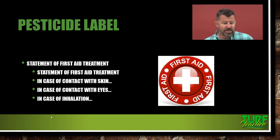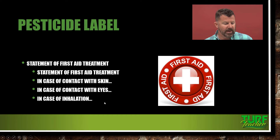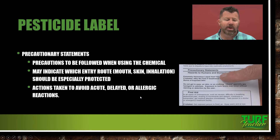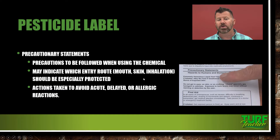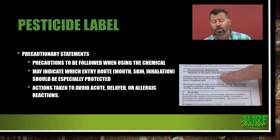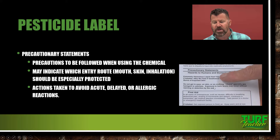Your statement of first aid and treatment: in case of contact with skin, do this; in case of contact with eyes, do this; in case of inhalation, do this. Precautionary statements will be followed when using the chemical — they may indicate which entry route should be especially protected and actions to avoid acute, delayed, or allergic reactions. Example: 'Hazardous to humans and domestic animals. Extremely hazardous liquid and vapor. If inhaled, may be fatal if swallowed. Burns exposed skin. Do not get in eyes, on skin, or on clothing.' Vicain specialty gas fumigant is odorless — exposure to toxic levels may occur without warning or detection by the user. That is some dangerous stuff. A lot of times they'll add tear gas to an odorless gas like this so you can actually smell it.